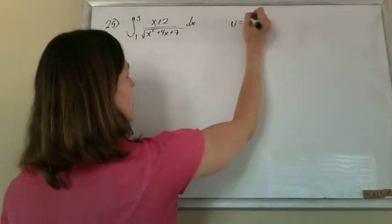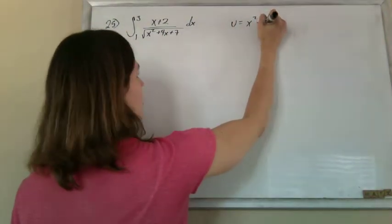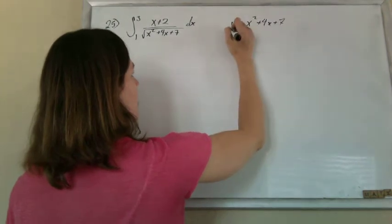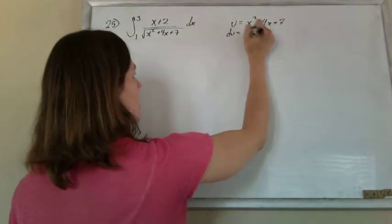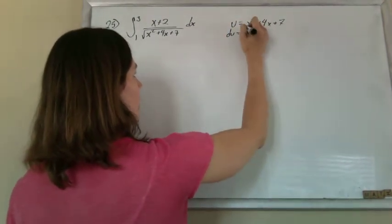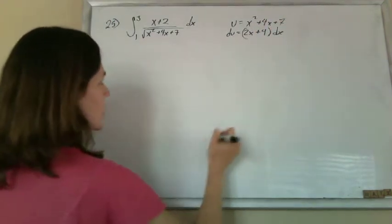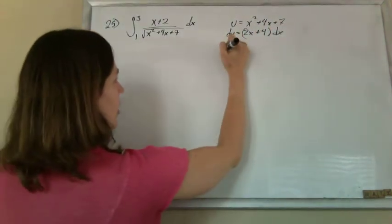So I'm going to regard the inside function, x squared plus 4x plus 7. When we take the derivative, we get 2x plus 4, the dx on the outside. And we don't quite see that there.